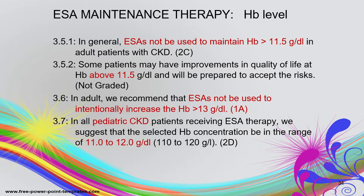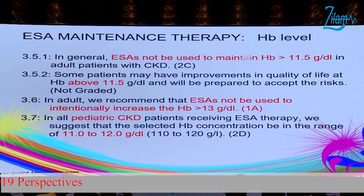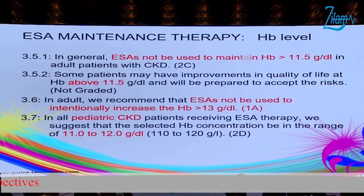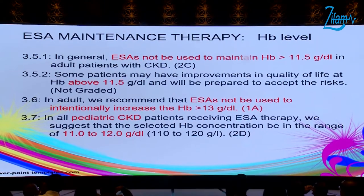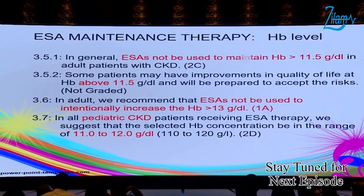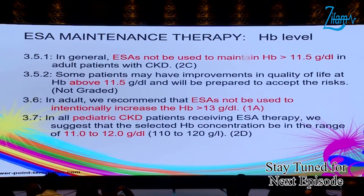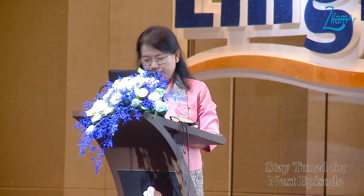What are the aims of using ESA? By using ESA, we aim to maintain the hemoglobin level above 11.5 g/dL. However, if hemoglobin reaches above 13, there are many adverse complications. Therefore, it is better to keep hemoglobin between 11 and 12 g/dL with ESA therapy.